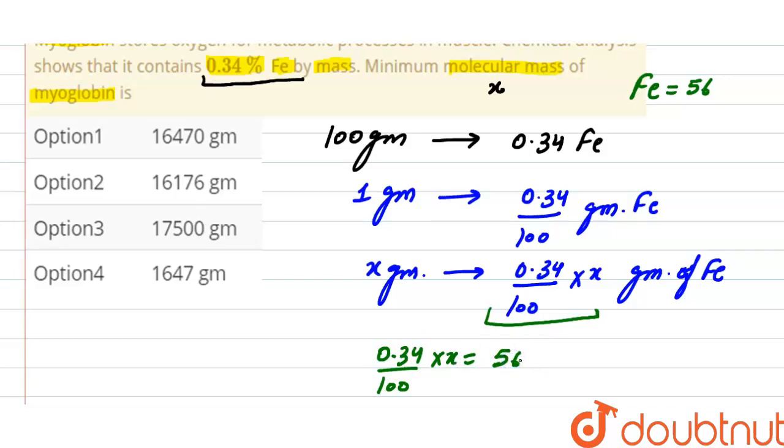So from here, X, that is the molecular mass of myoglobin, will be 16470 gram. So the molecular mass of myoglobin will be 16470 and the correct option here will be option 1.